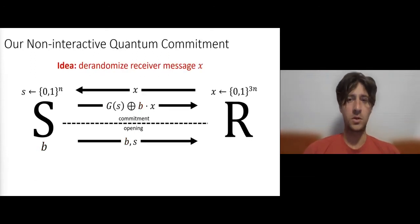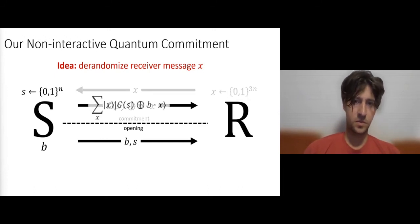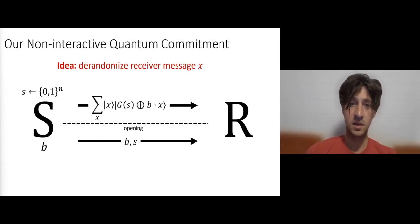So let's move to our quantum commitment. And the basic idea is to use the fact that it is quantum to sort of derandomize the receiver message x. Specifically, we're going to have the sender create a uniform superposition over all strings x, all receiver strings x, and compute the corresponding Naor commitment in superposition for each one of them. And indeed, if the sender acted honestly, then measuring the state is going to result in a random receiver message x and a proper Naor commitment. And the hope is that using our quantum power, we can also check that the sender indeed generates a proper state.